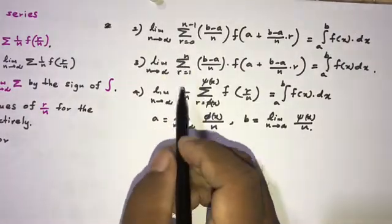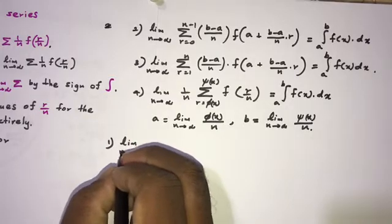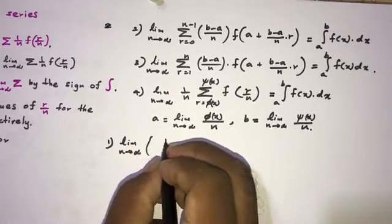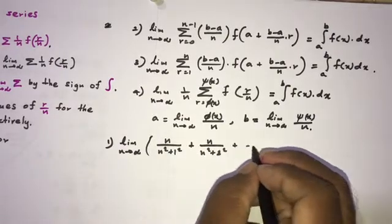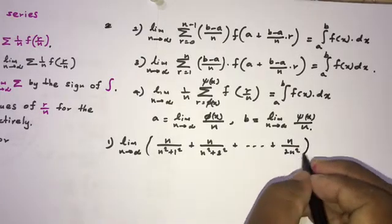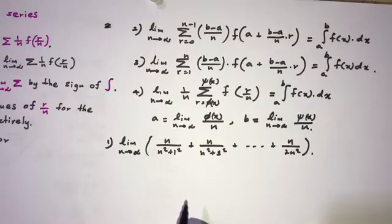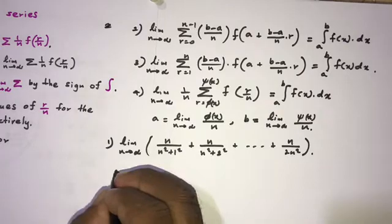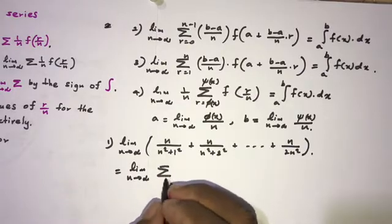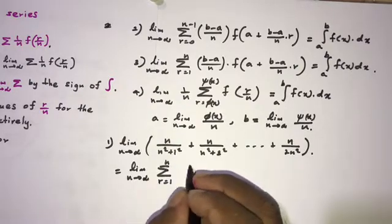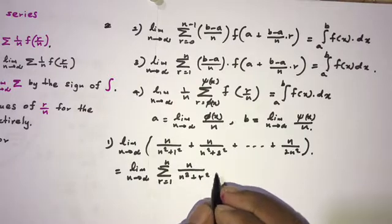Now we are going to discuss some examples. Example 1: limit n→∞ of [n/(n²+1²) + n/(n²+2²) + ... + n/(2n²)]. If we plug in infinity this is an indeterminate form, so we need to use another method. We can write this using sigma notation: limit n→∞ of sum (r=1 to n) of n/(n²+r²).